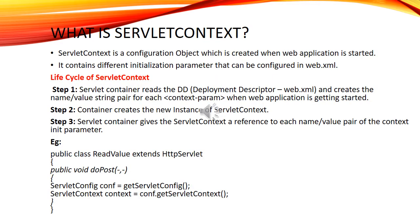What is servlet context? Servlet context is a configuration object which is created when a web application is started. It contains different initialization parameters that can be configured in web.xml. Lifecycle of servlet context: the servlet container reads the DD (deployment descriptor), web.xml, and creates name-value string pairs for each context parameter when the web application is getting started.